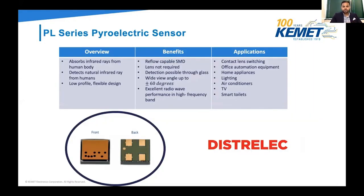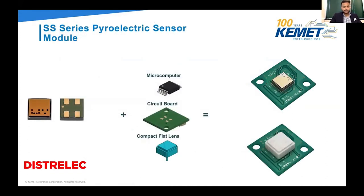Our PL series pyroelectric sensor, which you can find on DistriLEC, is low profile with a flexible design and excellent radio wave performance in high-frequency bands — suitable for industrial and home automation applications. We also have our pyroelectric sensor in a module solution, which comes with a circuit board and a microcomputer. All the driving is already done for you, so it's basically plug and sense — very easy to implement. The lens is optional, and we have a couple of different colors for the lens.